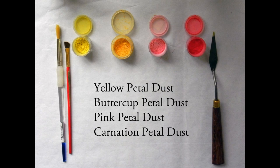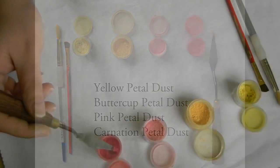Next we're going to do the fun stuff. We're getting out our petal dust. These are all global sugar art colors: yellow petal dust, buttercup petal dust, pink and carnation petal dust. I did get these all at GSA, but I believe as of the recording of this they're changing over to Alan Tetreault's line. Totally worth getting though.